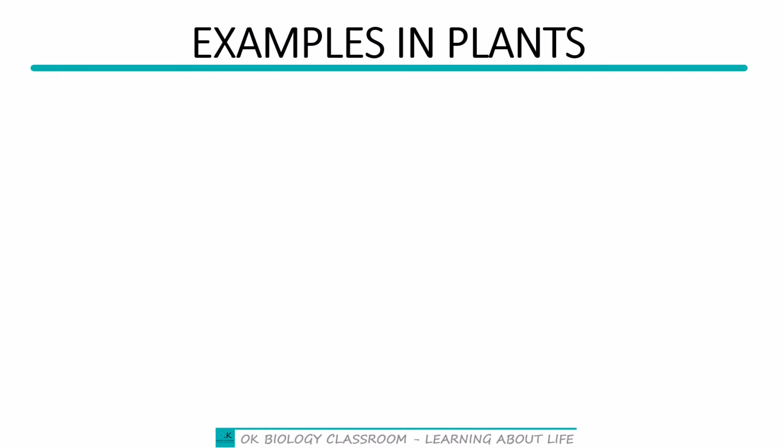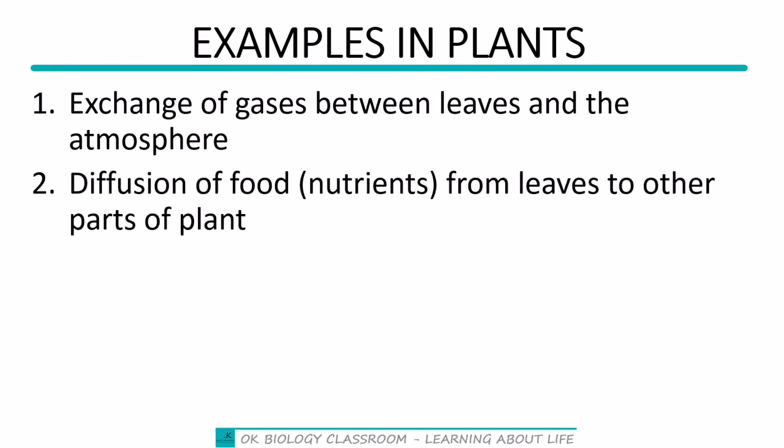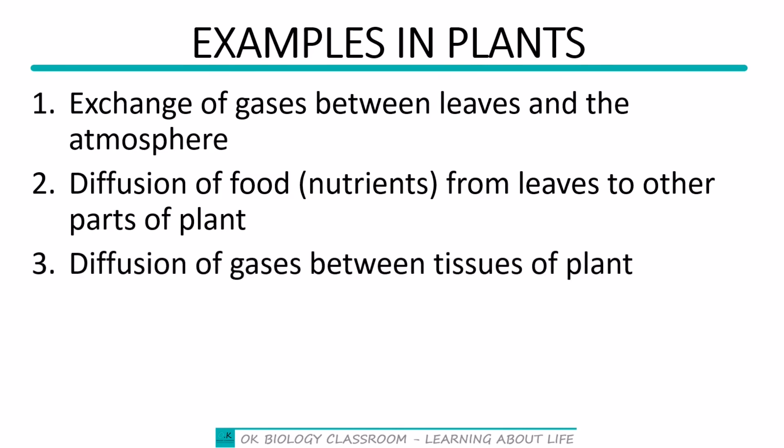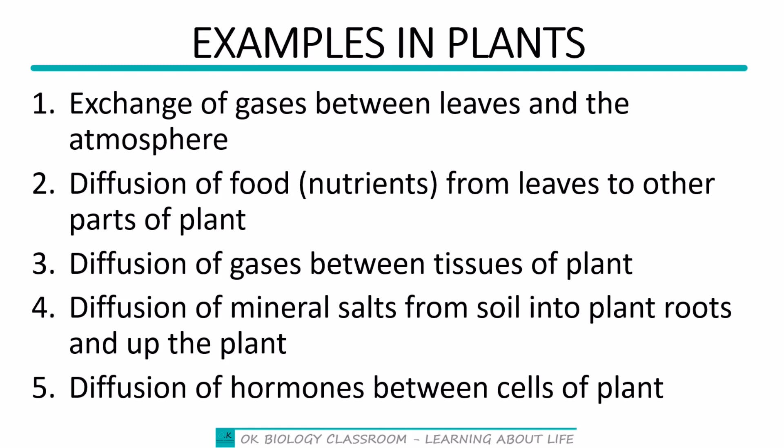In plants: exchange of gases between leaves and the atmosphere — carbon dioxide diffuses into leaves for photosynthesis, and oxygen diffuses out into the atmosphere. Diffusion of food or nutrients from leaves to other parts of the plant, movement of gases from tissue to tissue by diffusion, absorption of mineral salts from the soil into plants through the roots, and diffusion of hormones between cells of plants.